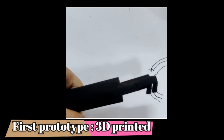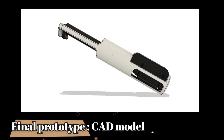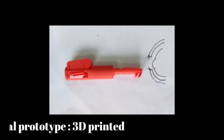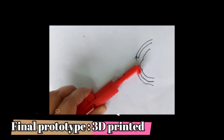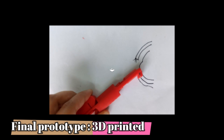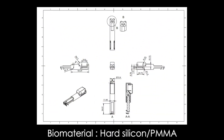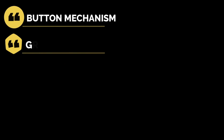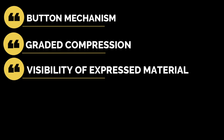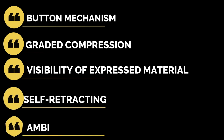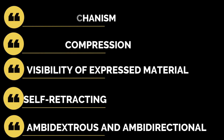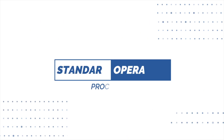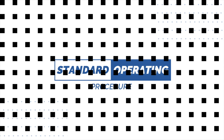We designed the model in CAD and 3D printed the first prototype, which we realized had some drawbacks, so we corrected these and 3D printed the next prototype. The actual dimensions of MAGE are displayed here, along with the materials that are compatible to be used. The thing that makes MAGE unique from other available meibomian gland expressers is its button mechanism, its self-retracting nature with graded compression, the ability to view the expressed material, along with ambidextrous and ambidirectional usability.